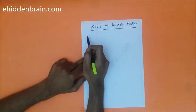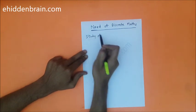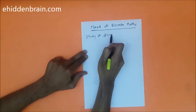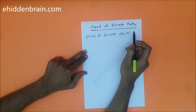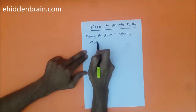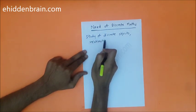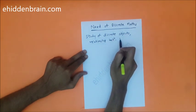Discrete math is a study of discrete objects. We study the relationship between these objects.